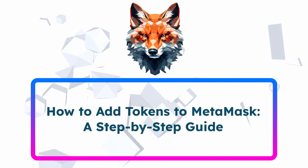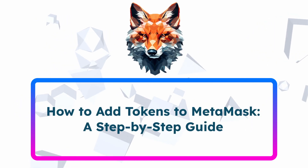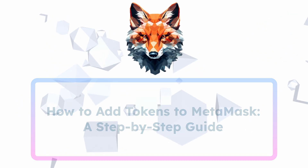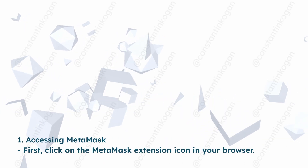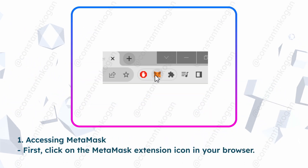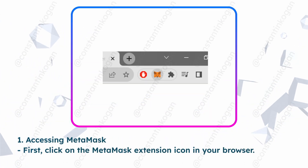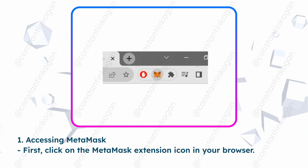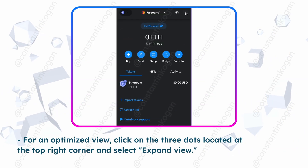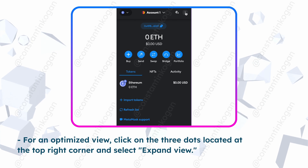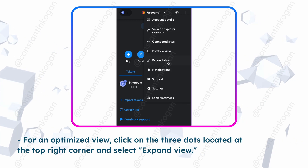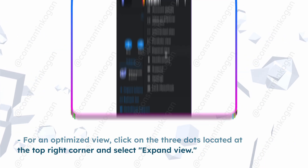How to add tokens to MetaMask: a step-by-step guide. First, click on the MetaMask extension icon in your browser. For an optimized view, click on the three dots located at the top right corner and select expand view.